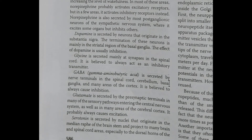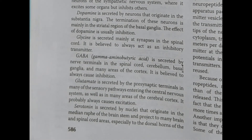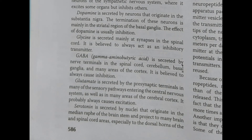Serotonin is secreted in the nuclei originating in the median raphe of the mid-brainstem. These neurotransmitters' basic functions and secretion sites provide an overview of the areas they work on — some secreted in terms of sensory pathways, some working on the total motor area. Knowing their functions and sites allows us to determine which drugs to use when pathology occurs in a certain region.